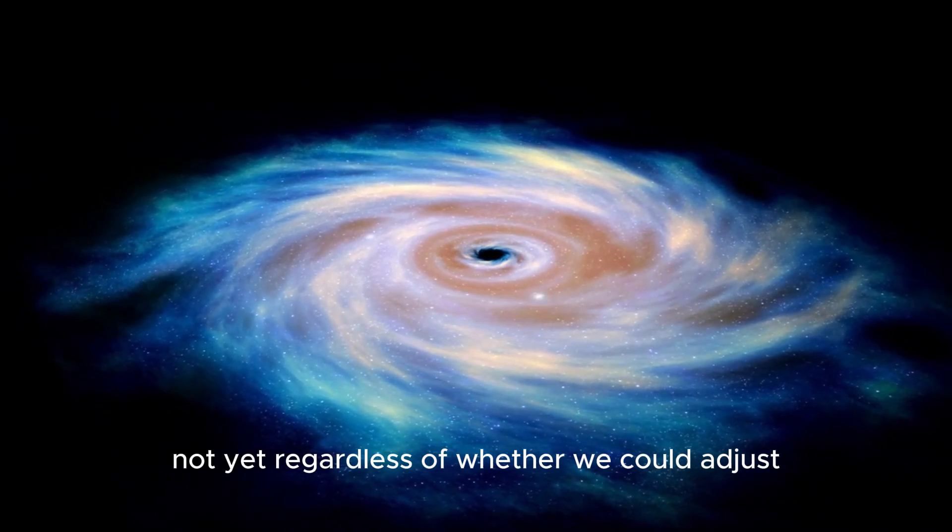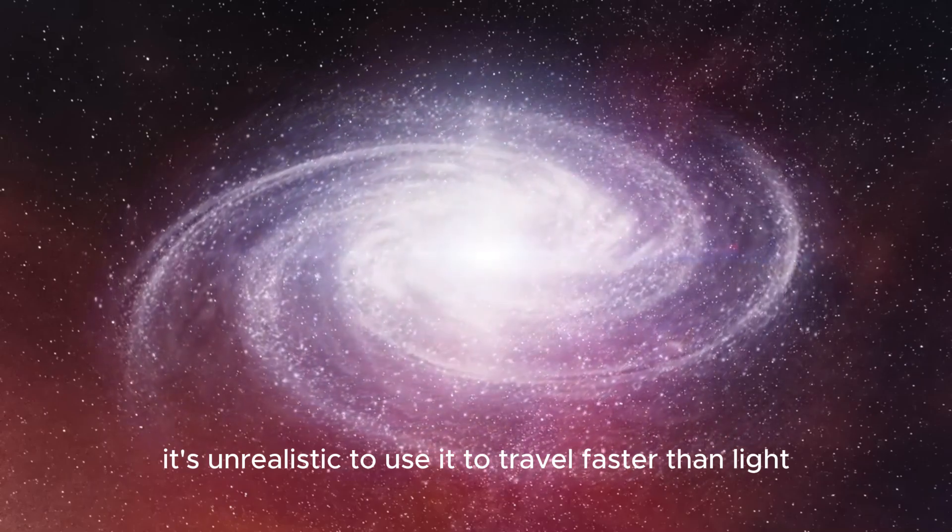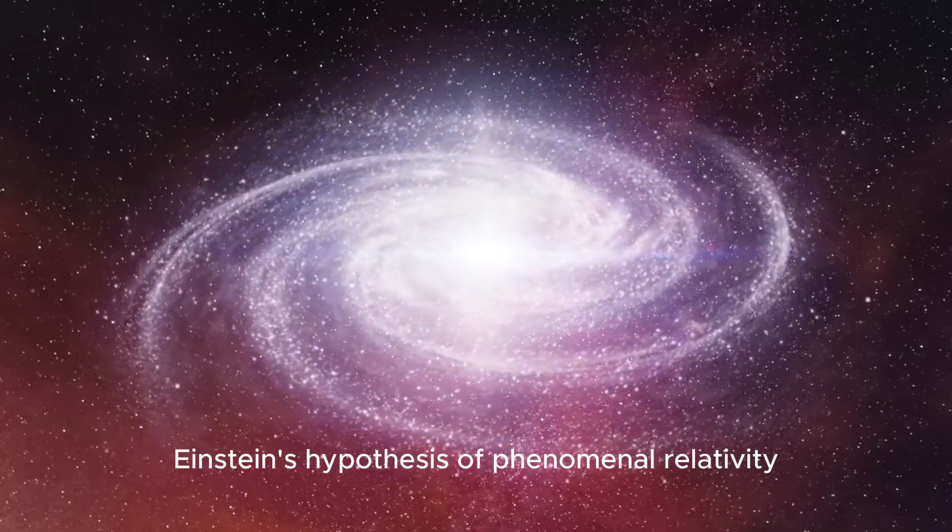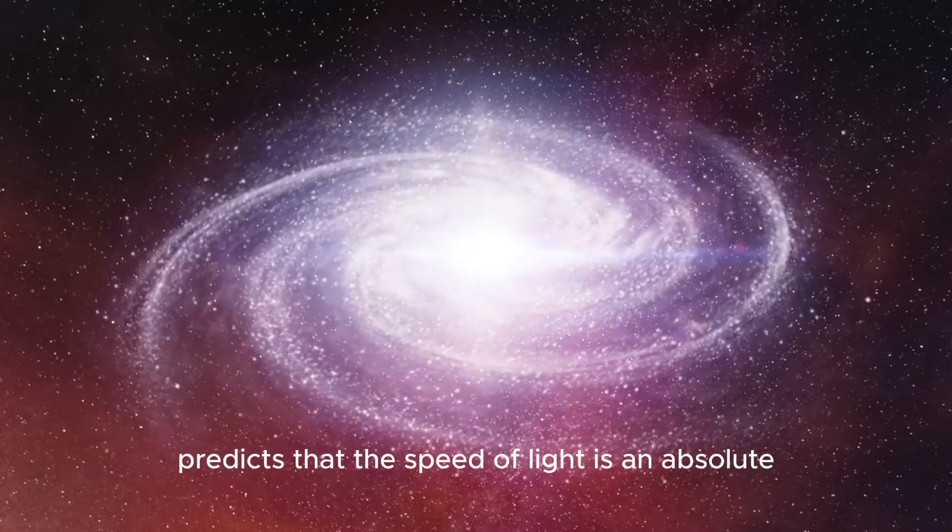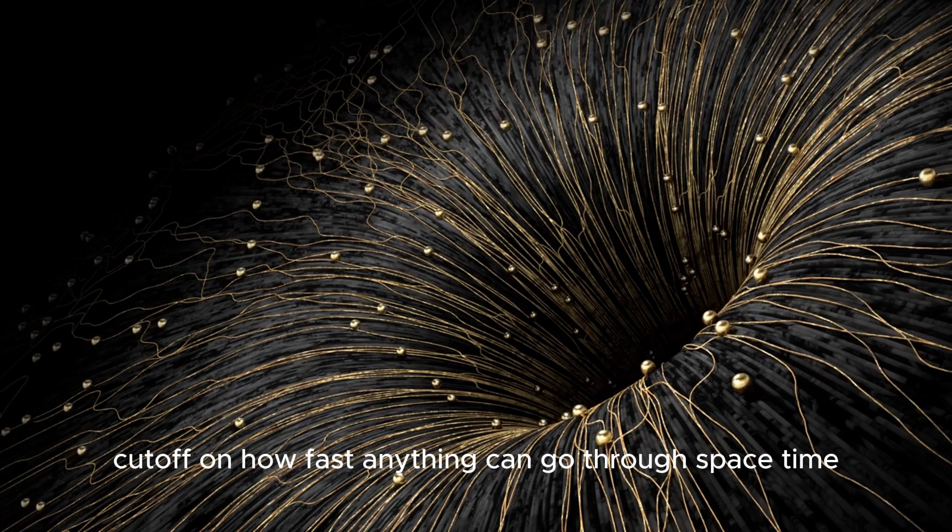Regardless of whether we could adjust the fact that we make out a wormhole, it's unrealistic to use it to travel faster than light. Einstein's hypothesis of phenomenal relativity predicts that the speed of light is an absolute cut-off on how fast anything can go through space-time.